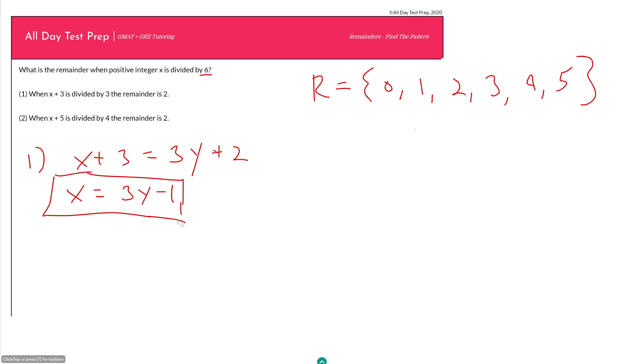So if we wanted to generate a bunch of values for x, we should be able to do that here. If we start with when y is equal to 1, x is equal to 3 times 1 minus 1, which is 2. Then when y is 2, x would be 3 times 2 minus 1, which is 5. So it looks like we're going up by 3 each time. So here are some possible values for x.